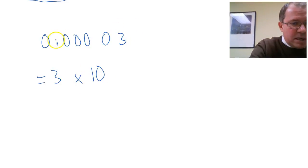This is really useful for scientific notation, because in scientific notation we have things like really small numbers like 0.00003, for example, and we write that as 3 times 10 to the power—where have I moved the decimal point? 1, 2, 3, 4, 5—3 times 10 to the power of minus 5.